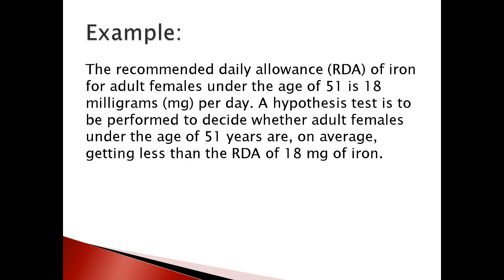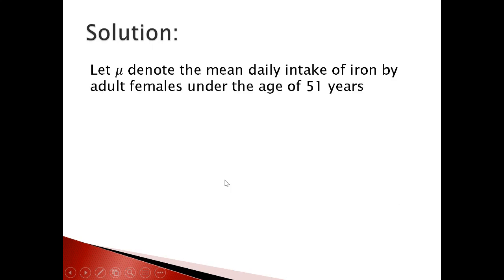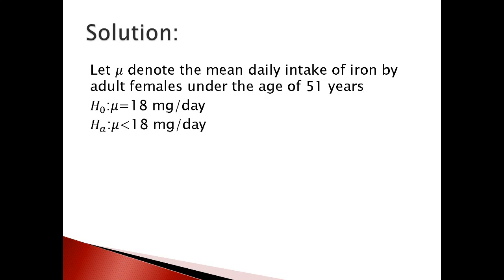A hypothesis test is to be performed to decide whether adult females under the age of 51 are on average getting less than the RDA of 18 mg of iron. The keyword is 'less than.' Since this is less than, it is clearly a left-tail test. If we denote μ as the mean daily intake of iron by adult females under the age of 51, the null hypothesis is: H₀ such that μ = 18 mg per day. The alternative is: Hₐ such that μ < 18 mg per day. So it's a left-tail test.